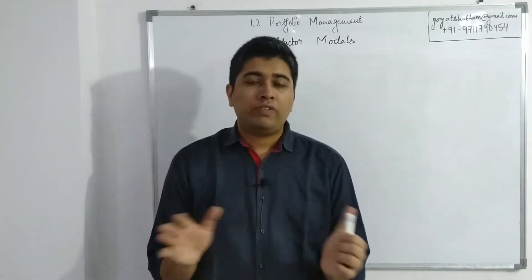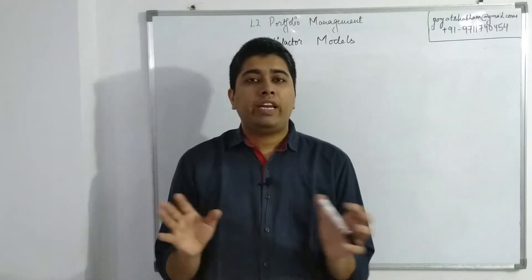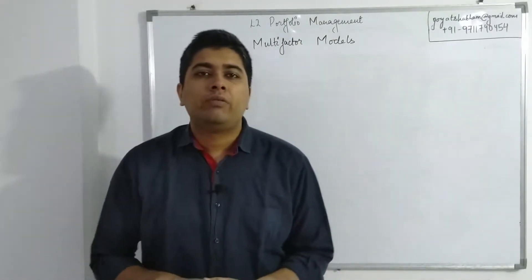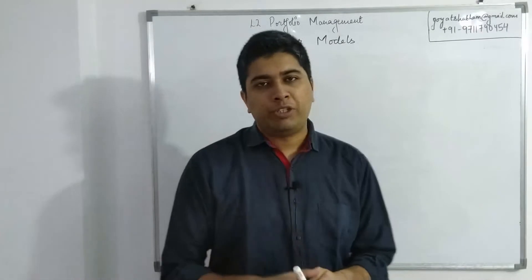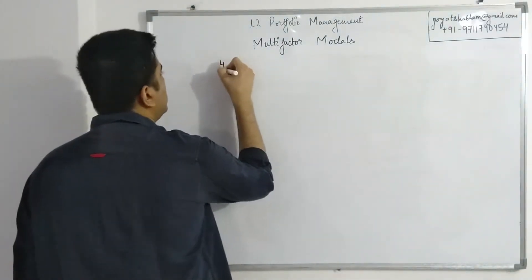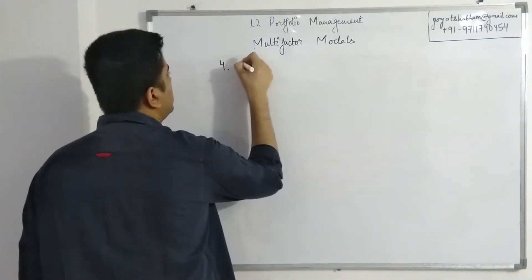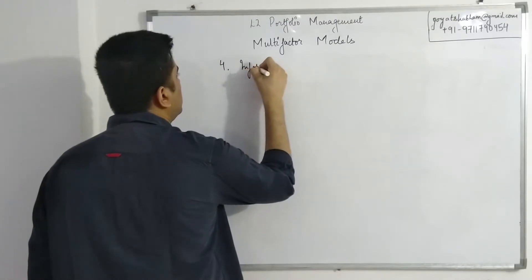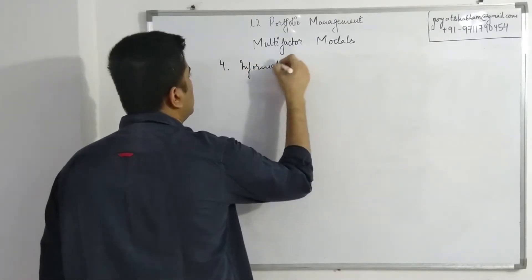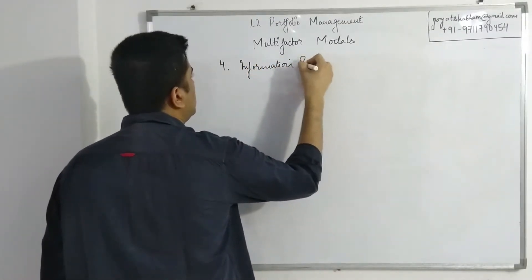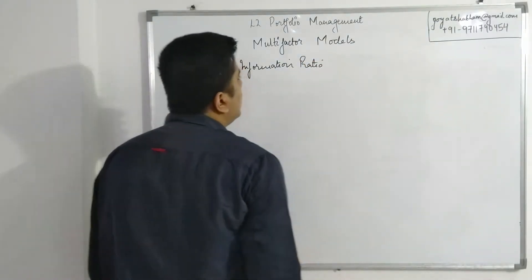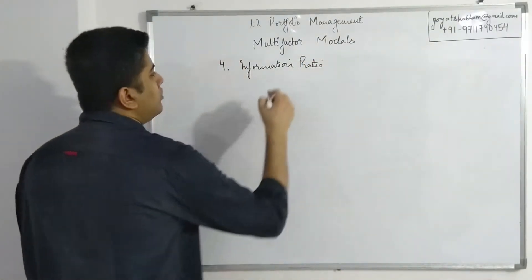All three of these — active return, active risk, and the information ratio — are fairly connected, so let's start right away with the basic equations for information ratios.